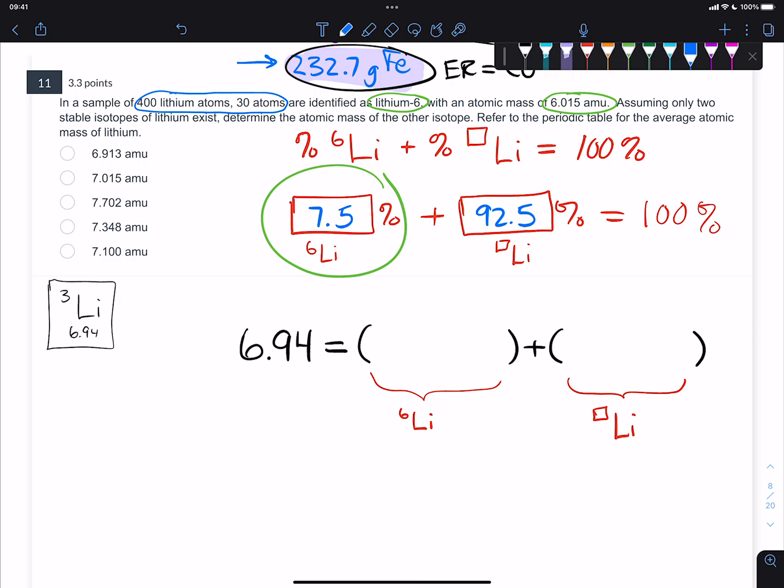Well, we actually have some important information already regarding the lithium-6. We know it has an atomic mass of 6.015. So we're going to take our percent, turn it back into a fractional number, so decimal: 0.075. We're going to multiply that by its mass, which is 6.015. Now we've got to deal with the other isotope.